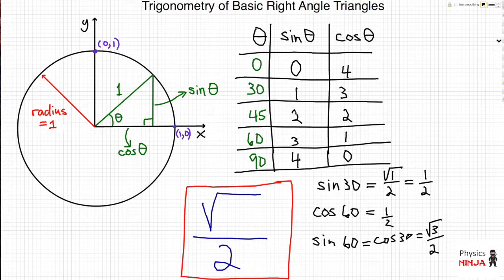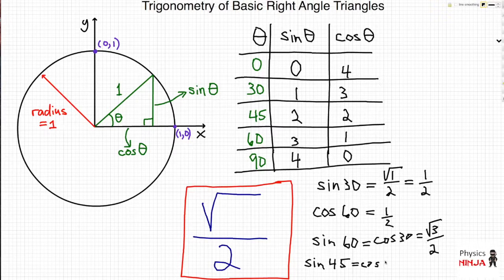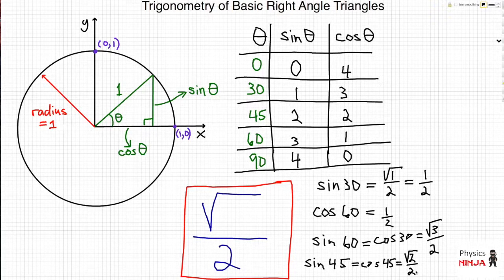The other thing you notice is that sine of 45 is equal to cosine of 45. Sine of 45 equals cosine of 45, and you simply plug in the value of 2 into the magic formula, giving square root of 2 divided by 2. There you have it — a simple trick to remember the sine and cosine of basic right angle triangles in the first quadrant.